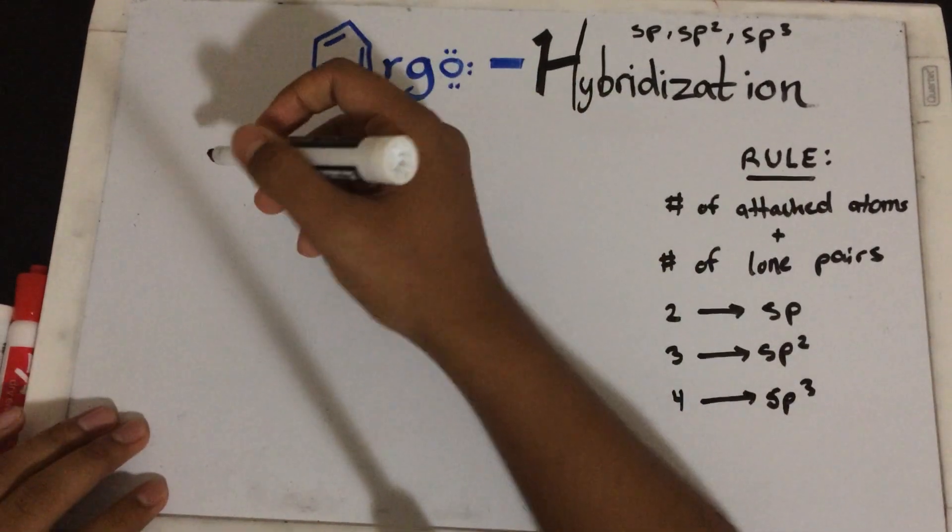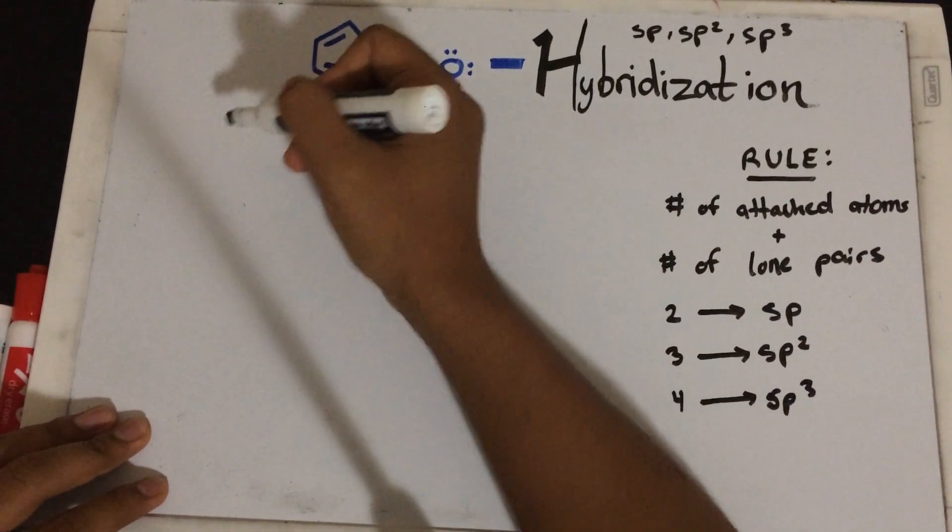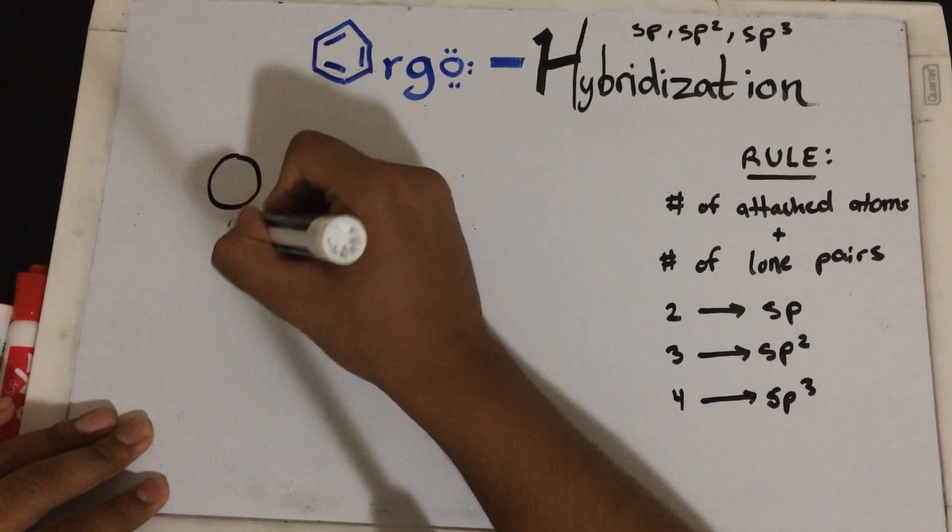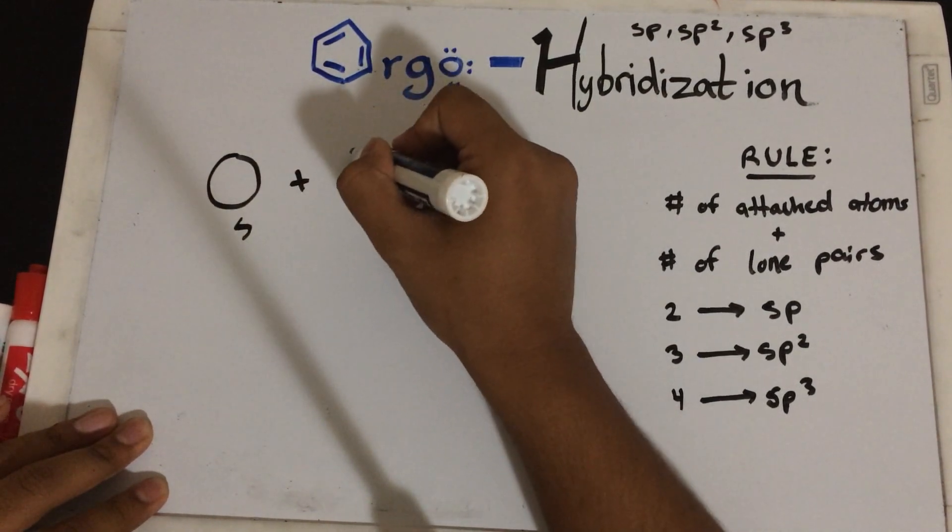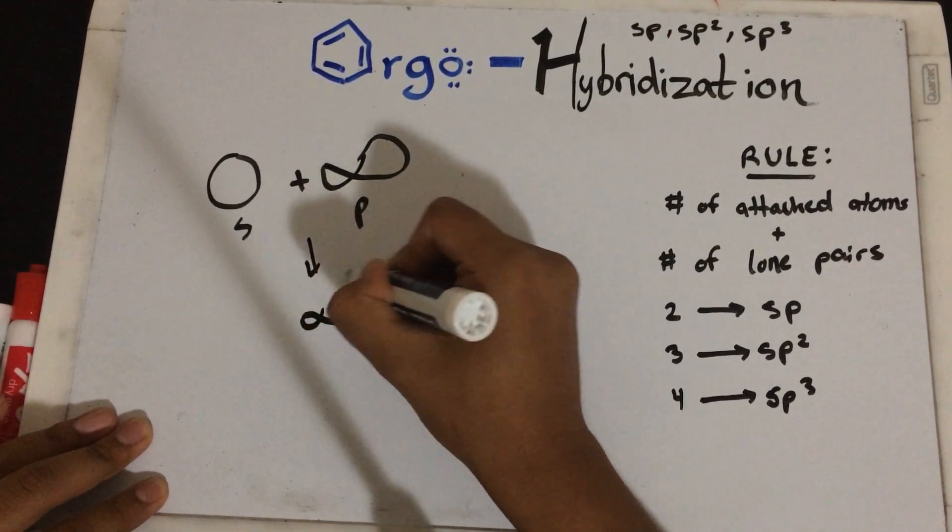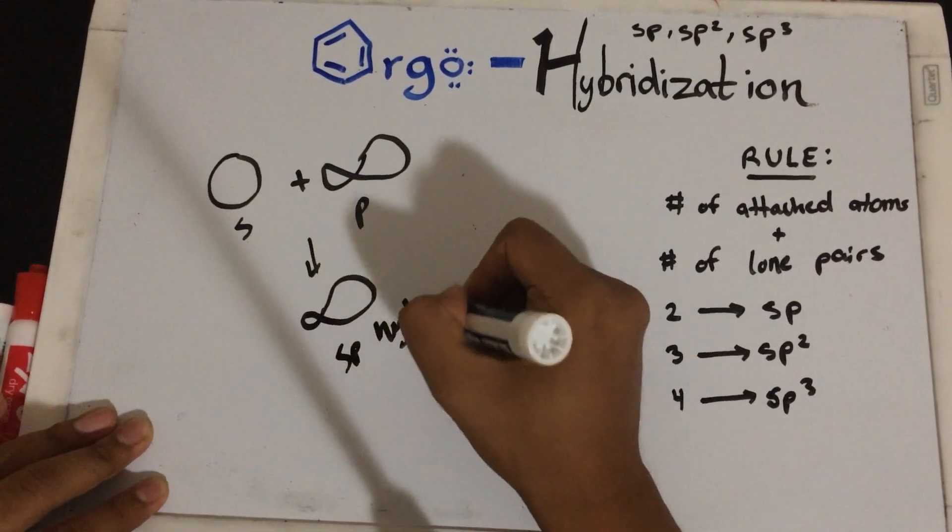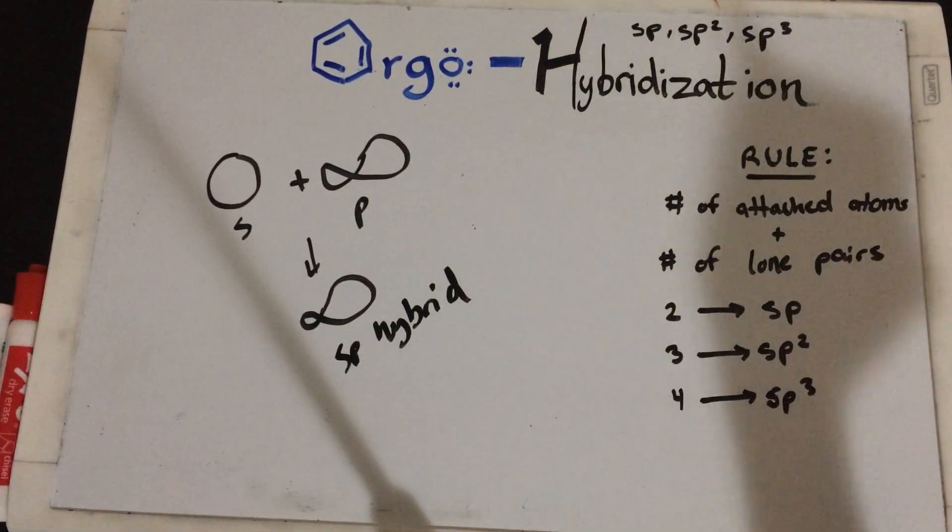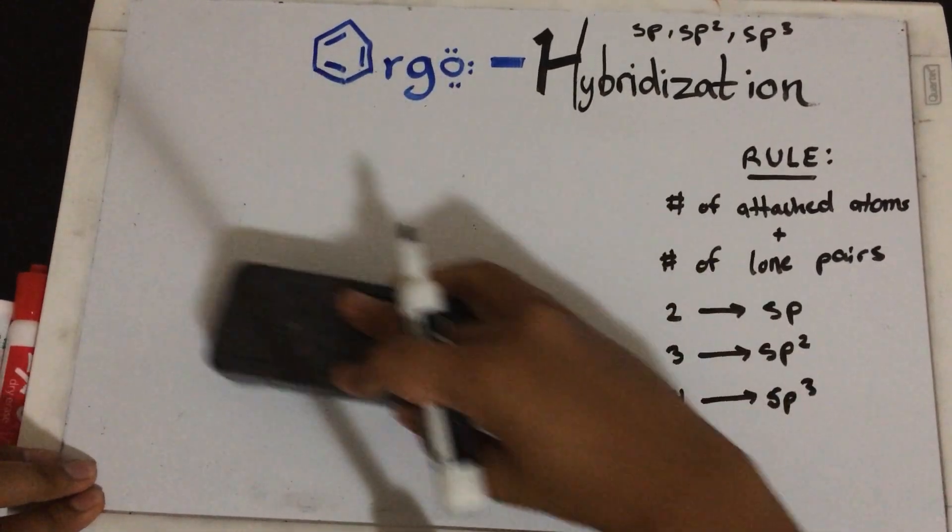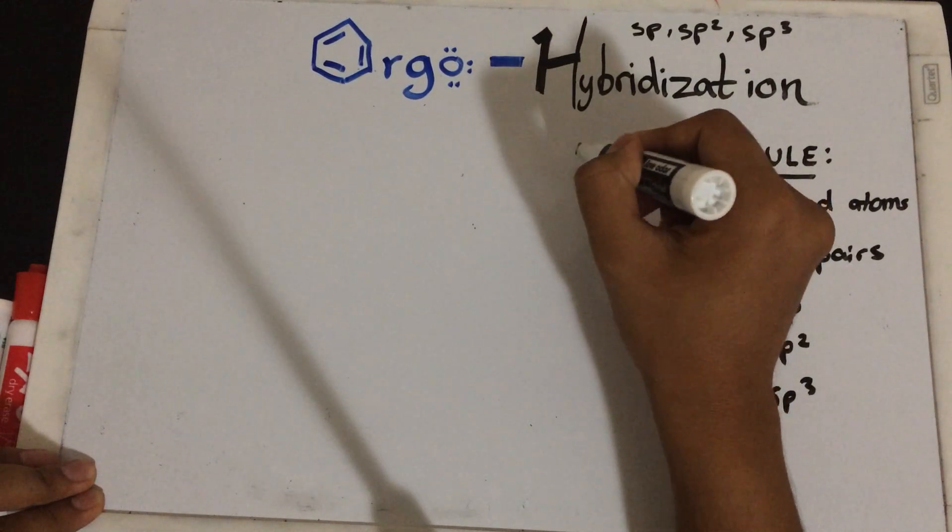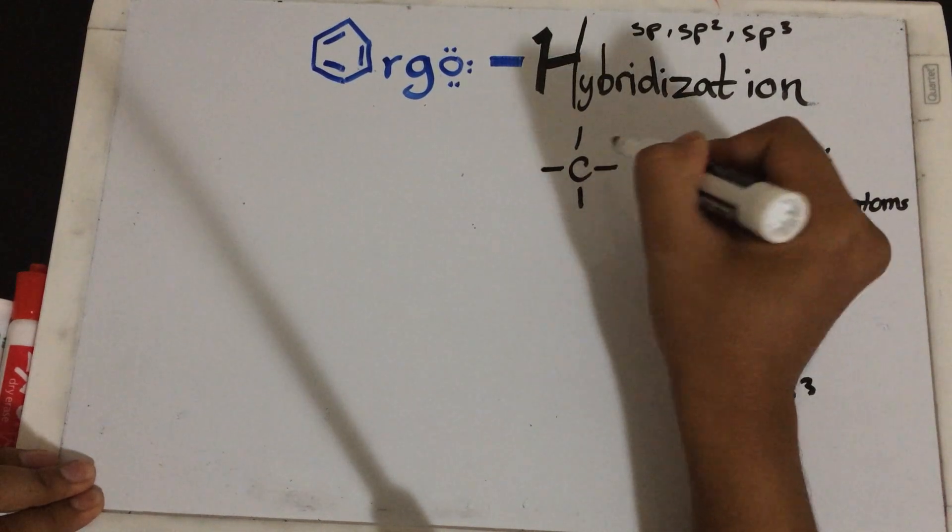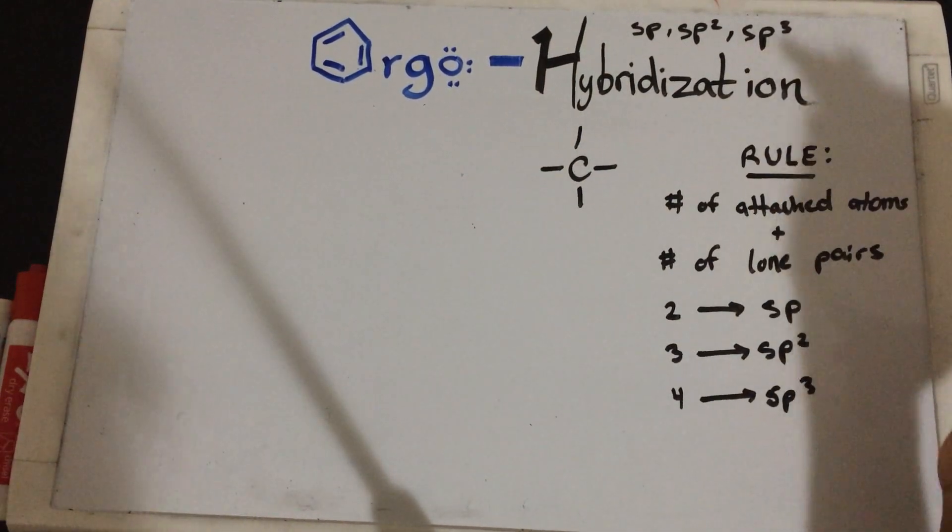The idea behind hybridization is you're taking two things and combining them to make a hybrid. In chemistry, we're talking about taking S orbitals and combining them with P orbitals to make an SP hybrid. In order for us to understand this more, I'm going to use carbon as an example. Carbon being the central atom in organic chemistry. We know that carbon can make four different bonds with four different atoms.